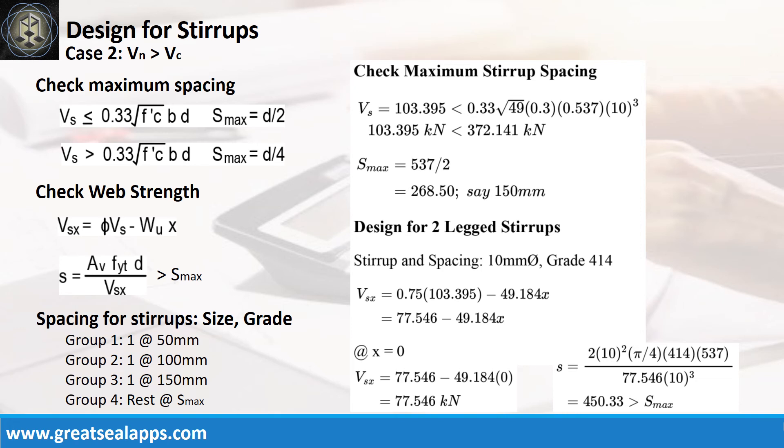The spacing of stirrups are as follows: one at 50 mm, one at 100 mm, rest at 150 mm.